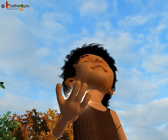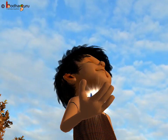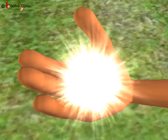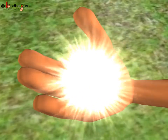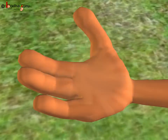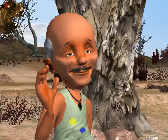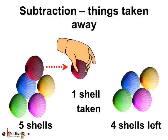So, shells were being taken away from the fisherman and he was left with lesser shells. Finally, he had no shell left. But don't feel bad, children — he had a large number of blessings from all the villagers, correct? So, when things are taken away or become less, we call it subtraction. Subtraction in simple words means taking away one or more things from what we already have.